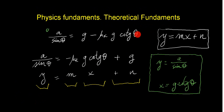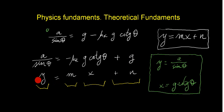This looks like the equation of a line, where n is g and mx is this term. What we're going to do is use this as the equation of a line, where the y values are a divided by sin(θ) and the x values are g times the cotangent of the angle.